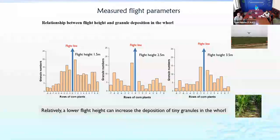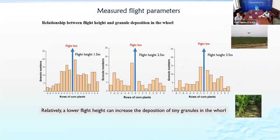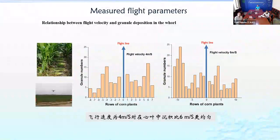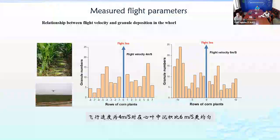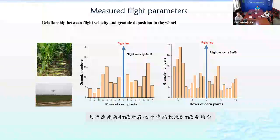I optimized many flight parameters. The flight height range is 1.5 to 3.5 meters, because lower flight height increases the separation of tiny granules in the whorl. For flight velocity, comparing four meters per second versus six meters per second, at four meters per second more granules deposit in the whorl of the plant.